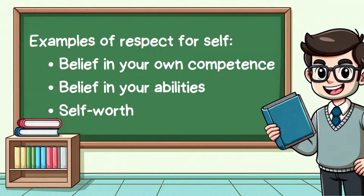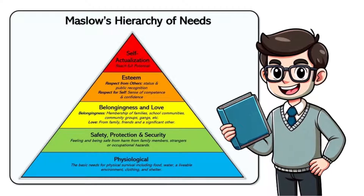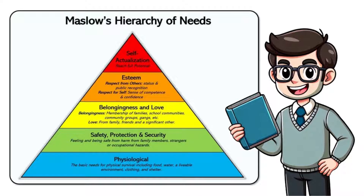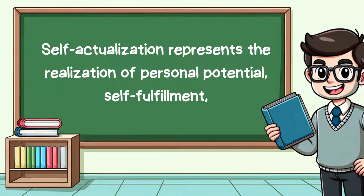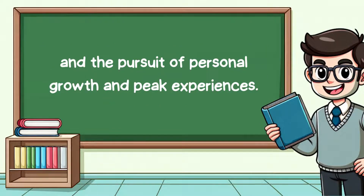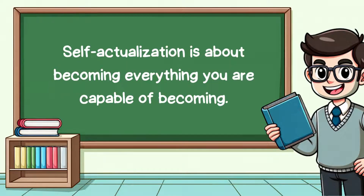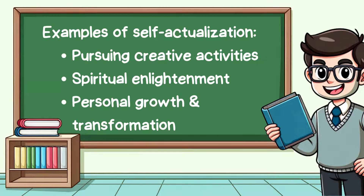The pinnacle of Maslow's hierarchy is self-actualization. This level represents the realization of personal potential, self-fulfillment and the pursuit of personal growth and peak experiences. It is about becoming everything you are capable of becoming. Examples include pursuing creative activities, seeking spiritual enlightenment and striving for personal growth and transformation.